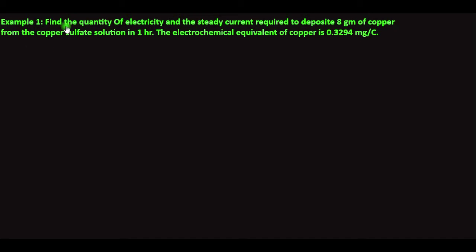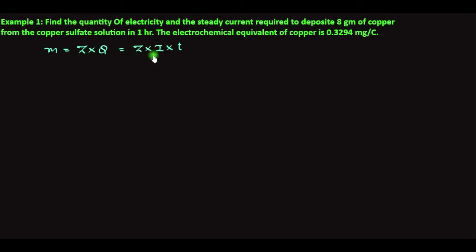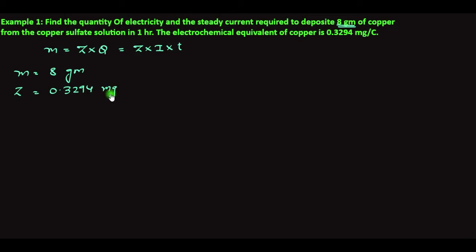Our first numerical: find the quantity of electricity and steady-state current required to deposit 8 grams of copper from a copper sulphate solution in one hour. The electrochemical equivalent of copper is 0.3294 milligrams per coulomb. So M = 8 grams, and Z = 0.3294 milligrams per coulomb.